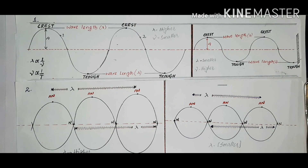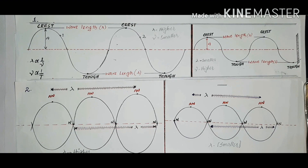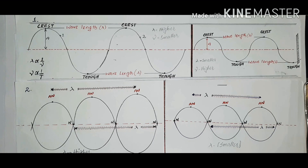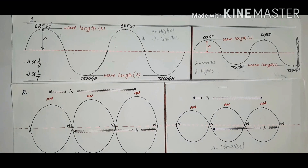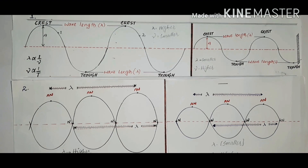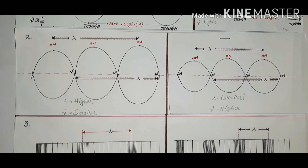The next term is amplitude. Amplitude is the maximum displacement of a particle from its mean position and is indicated by capital A. Apart from wavelength, frequency, and amplitude, there are other terminologies such as crest, trough, node, antinode, rarefactions, and compressions, which were already discussed in the first video. Now we will move towards the next concepts.